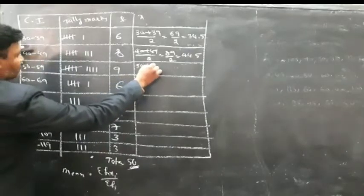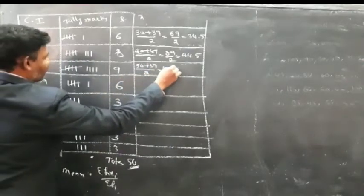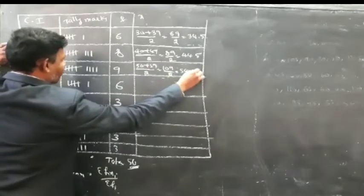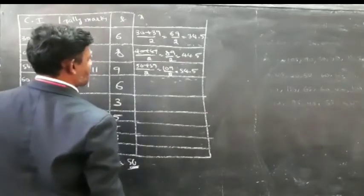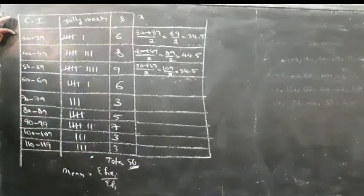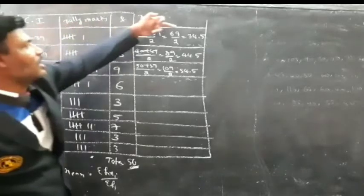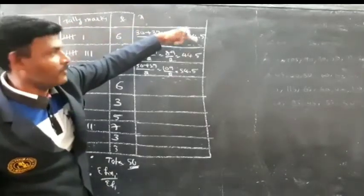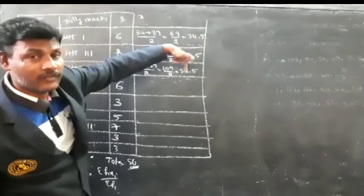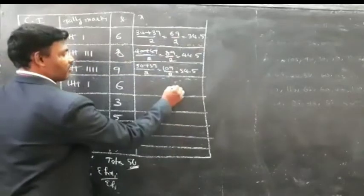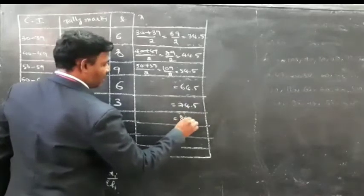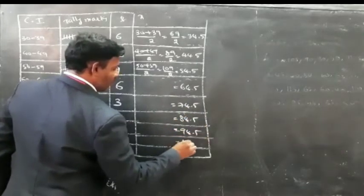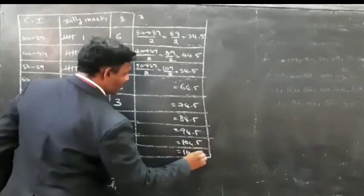For 50 to 59: 50 plus 59 divided by 2 equals 109 by 2, which equals 54.5. Notice the class intervals increase by 10 each time, so the mid-values also increase by 10: 34.5, 44.5, 54.5, 64.5, 74.5, 84.5, 94.5, 104.5, 114.5.